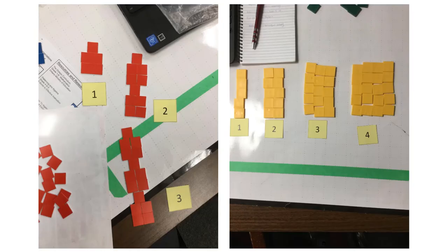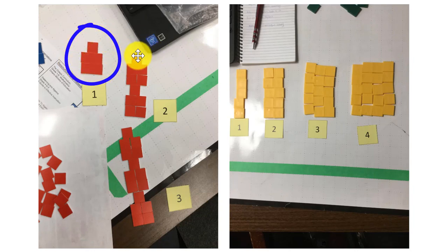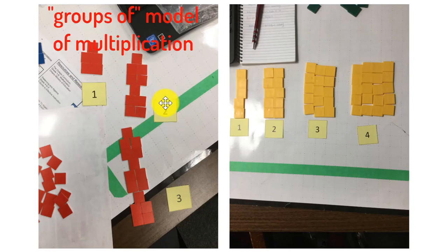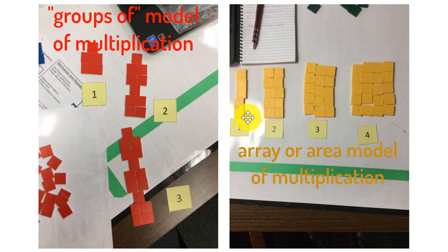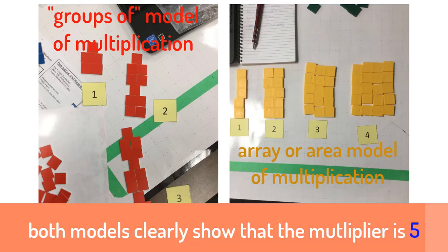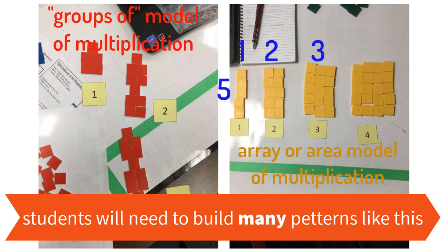Having a look at some student work — or in this case, the work of teachers at a workshop, which is very similar to the student work we see — the first group at position one have five tiles, showing one group of five. At position two they have ten tiles, showing two groups of five. At position three we have three groups of five, really showing us that groups-of model of multiplication. In the group over here, we can also see an array or area model: at position one it's one by five, at position two it's two by five, at position three it's three by five, and so on.